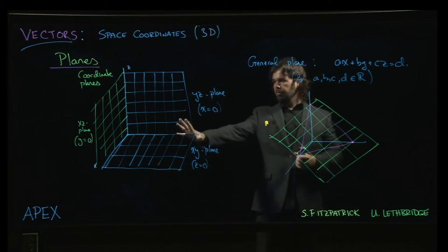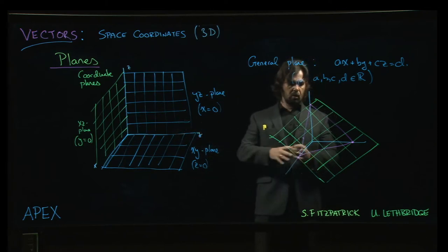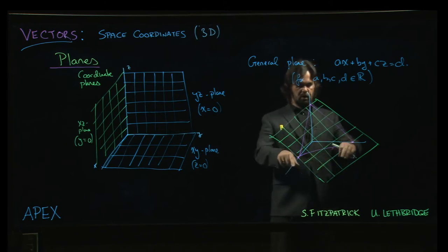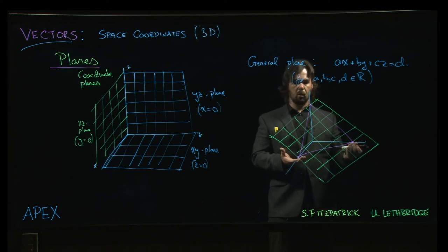Something that is perhaps parallel to one of the coordinate planes or, you know, maybe parallel to a line, passing through a line going through one of the coordinate planes. You can have that happen as well, of course.